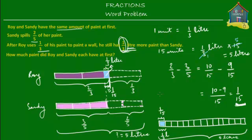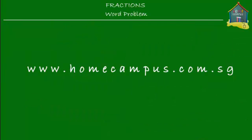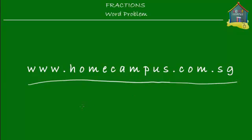That's the end of this word problem. At first sight it looks slightly complicated, but if you put down all the information into models and figure out relations, things start to become clearer. And if you practice more, you learn more and get better. Do check out more word problems at www.homecampus.com.sg. This is M signing off. Bye-bye.